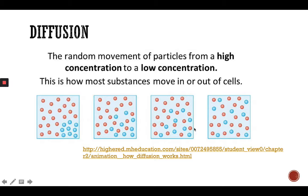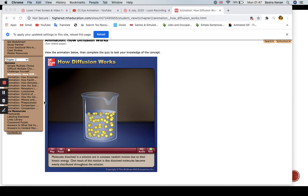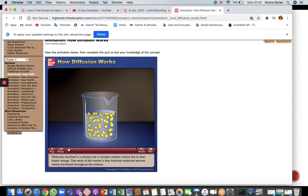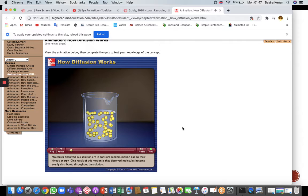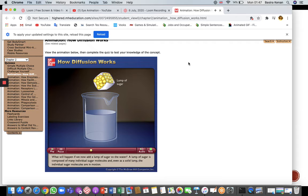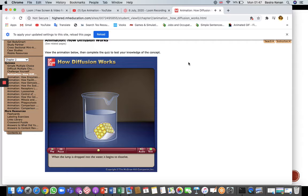Molecules dissolved in a solution are in constant random motion due to their kinetic energy. One result of this motion is that dissolved molecules become evenly distributed throughout the solution. This tendency of molecules to spread out is an example of diffusion. Let's start with a beaker of plain water. A lump of sugar is composed of many individual sugar molecules. When the lump is dropped into the water it begins to dissolve.